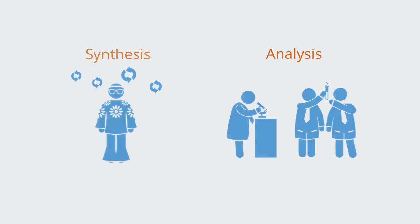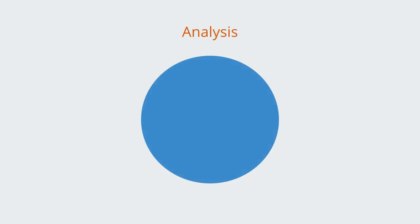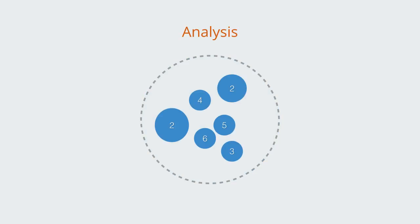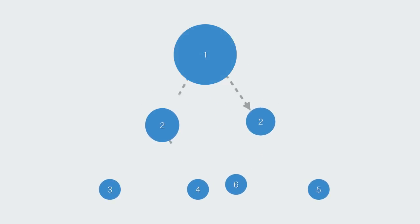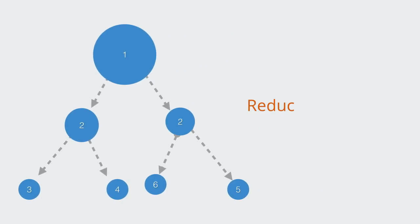With the process of analysis, we build a model of something by focusing on that system, decomposing it to understand its constituent parts, the simple interaction between those elements, and then we form an account of the whole in terms of the properties of these parts. The process of doing this is called reductionism, because we're reducing the system to its most elementary parts.